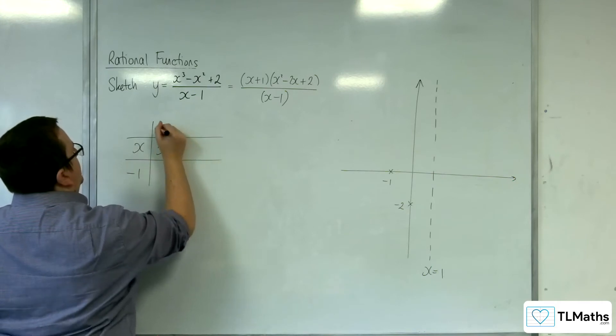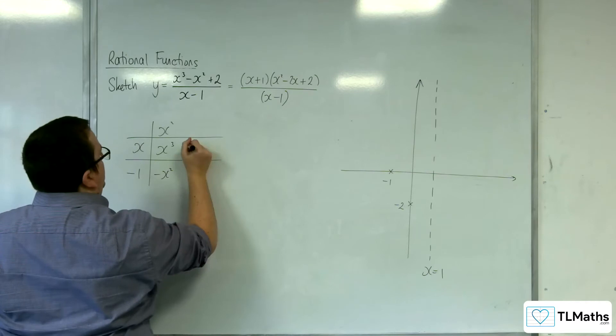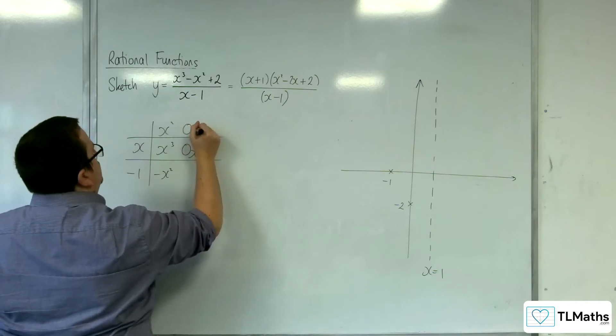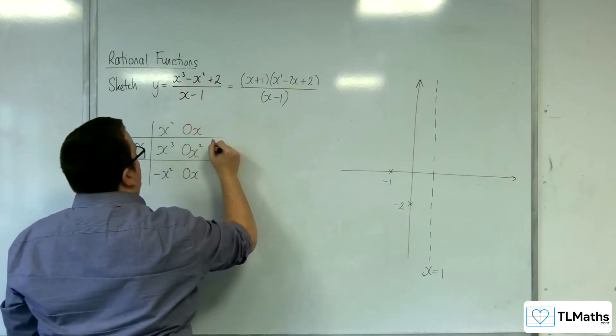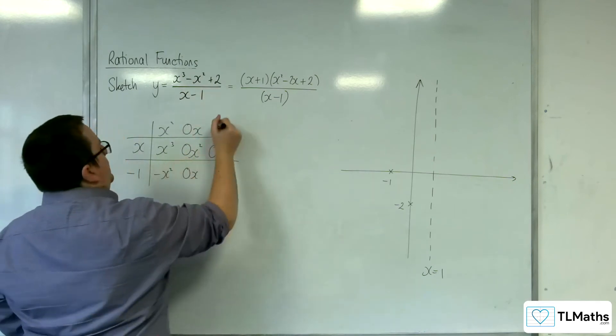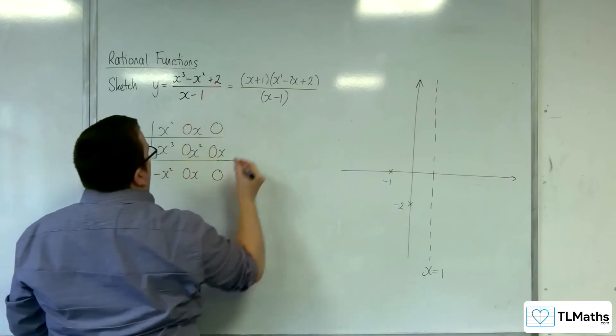So we've got the x cubed, so that'd be x squared. Minus x squared, I need a minus x squared, so that's got to be 0. x squared, so that's going to be 0x, that's going to be 0x, but I don't need any x's, do I? So that's 0x, and so that's 0, 0, and I need plus 2.